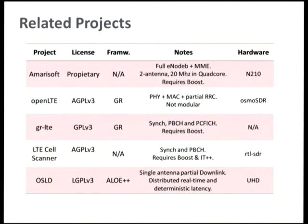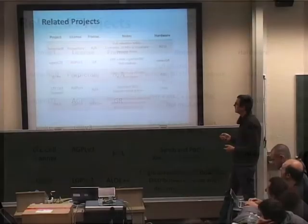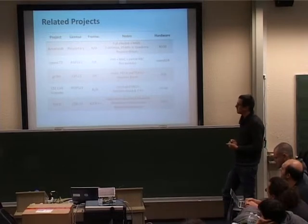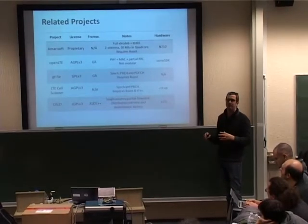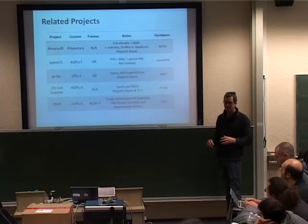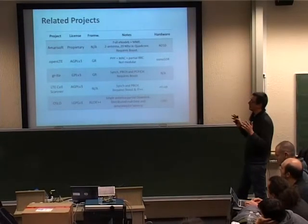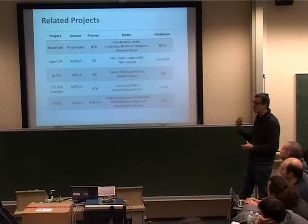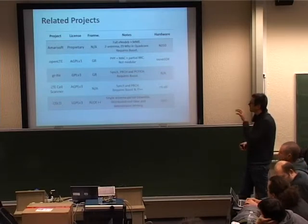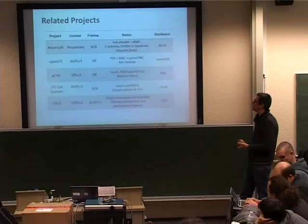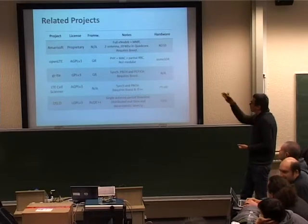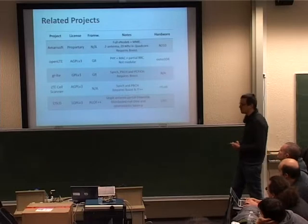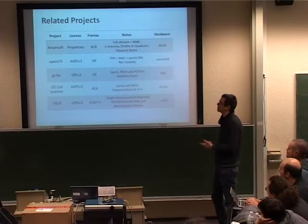In this table I summarized the related projects on LTE. The first one, the Amarisoft software, is probably the best LTE software we have today. Unfortunately, it's proprietary. It is able to run in real-time on a quad-core with two antennas and 20 MHz bandwidth. They implemented the eNodeB as well as the MME, and it works down to the N210 user. But unfortunately, it's proprietary.